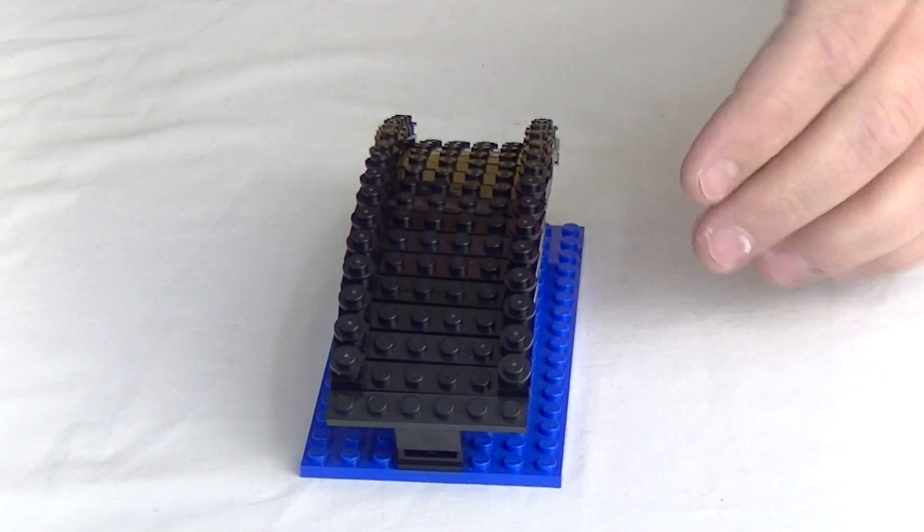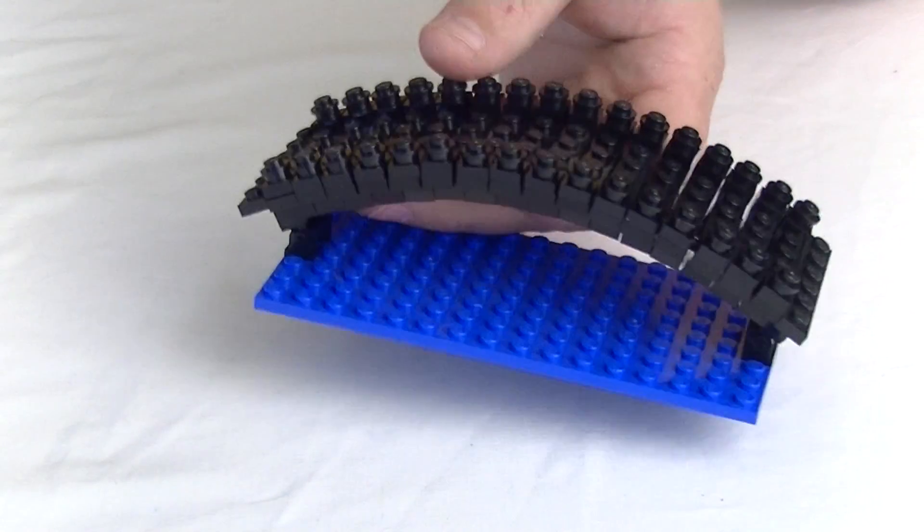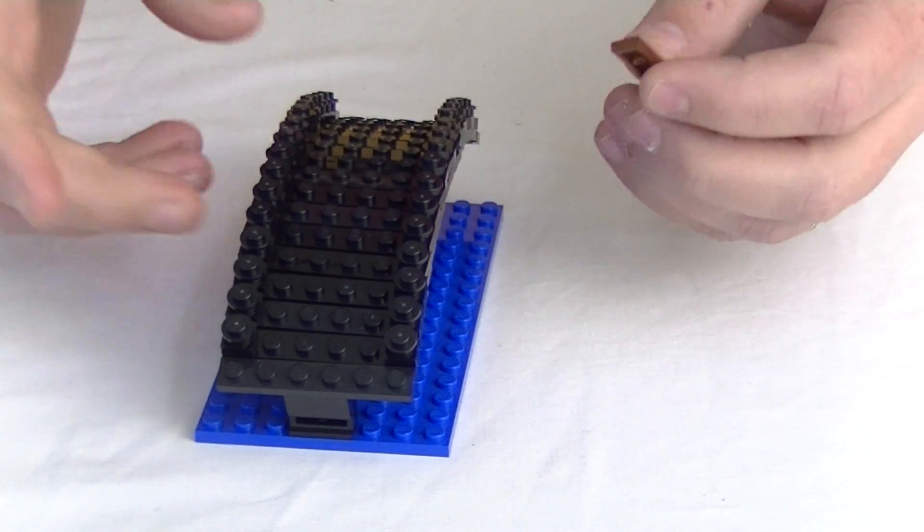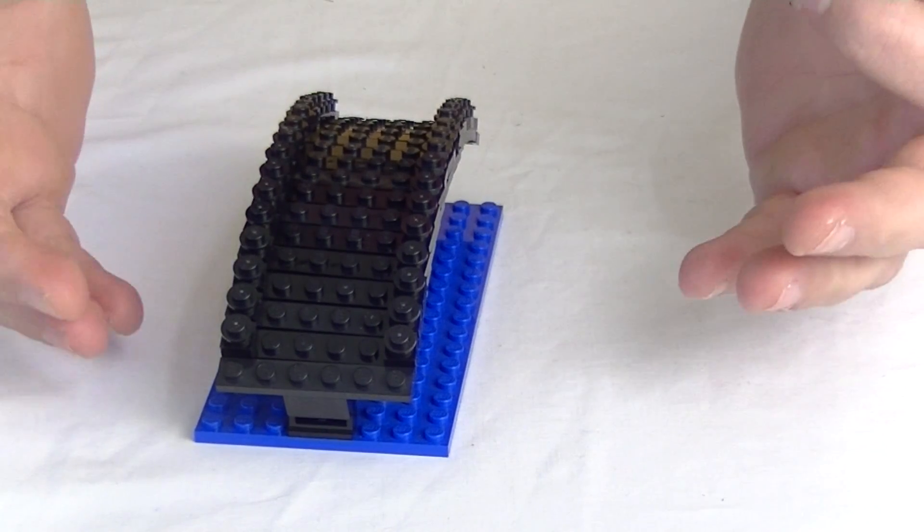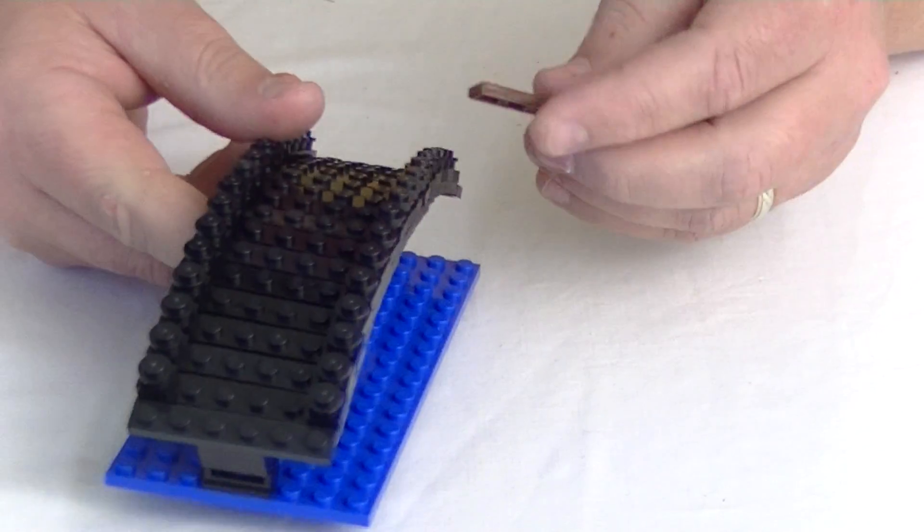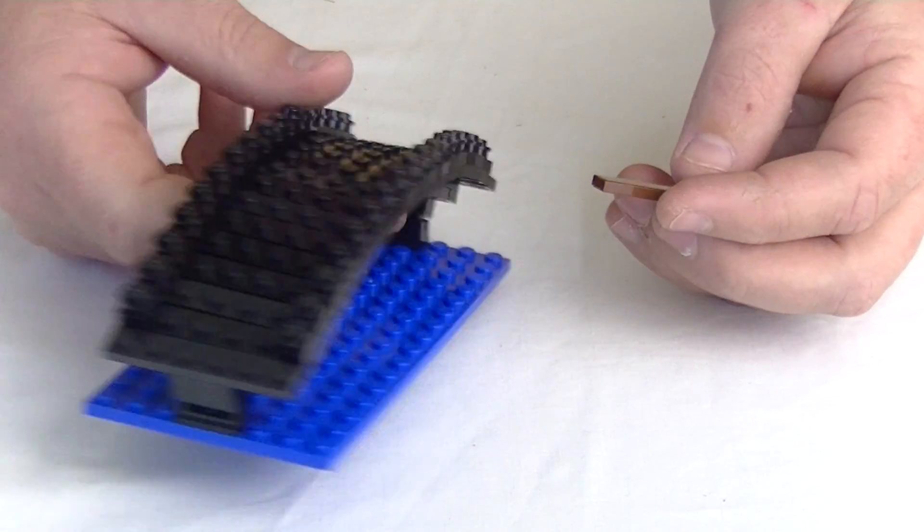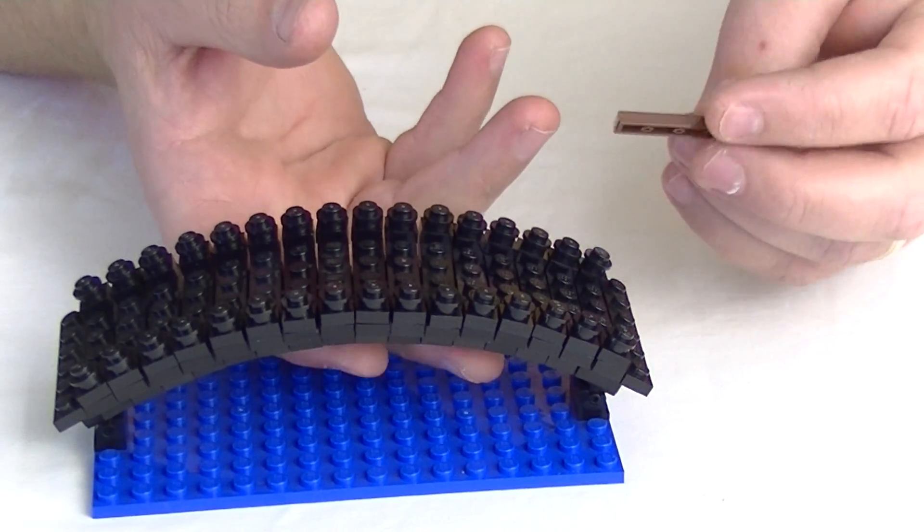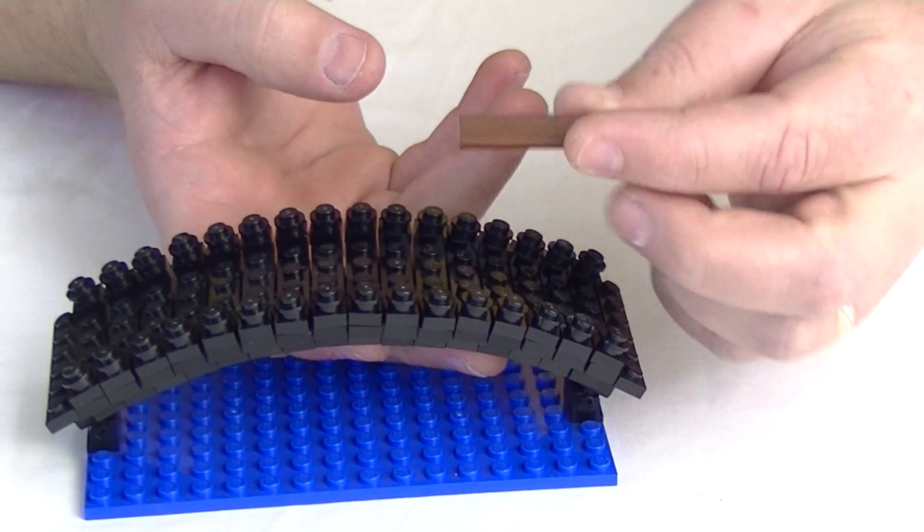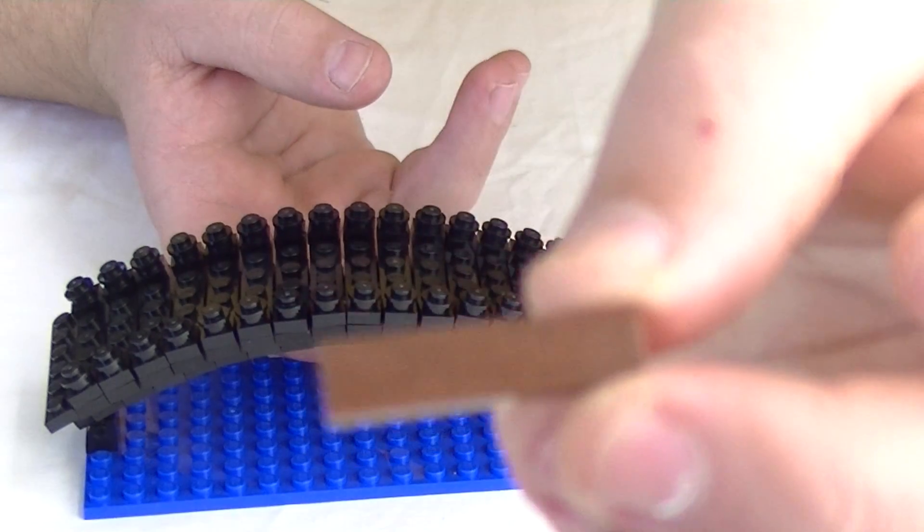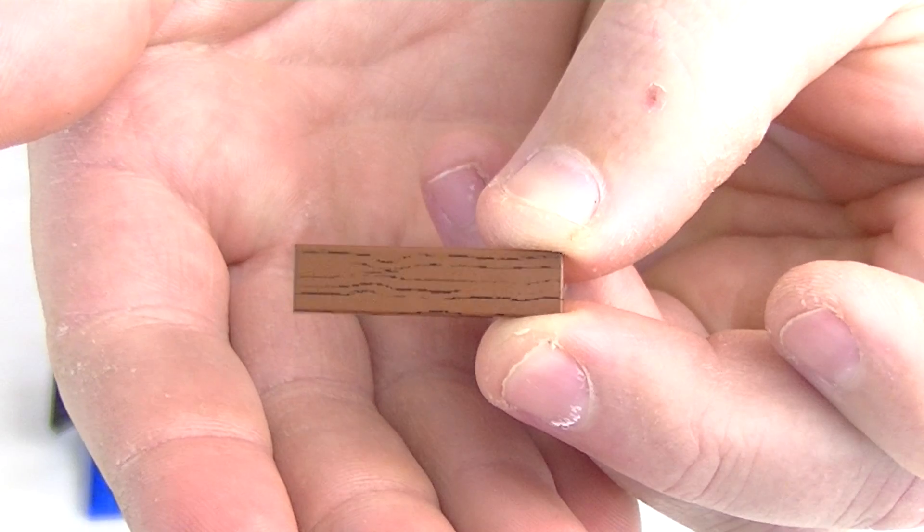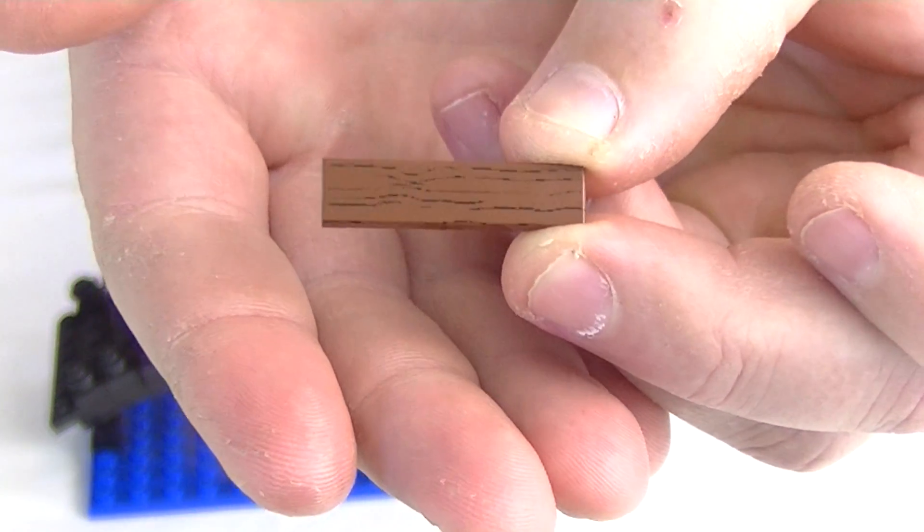Now you could do this all in reddish brown and just make it like a complete timber bridge. Because I've got a boardwalk in the city which is a lot of brown anyway, I wanted to do something a little bit different with this one just make it stand out, and that's why I've chosen to do it in black. Now it's time to add a little bit of timber.